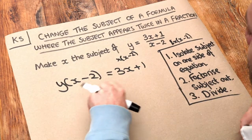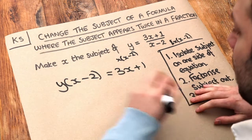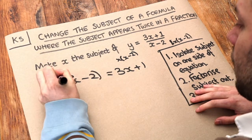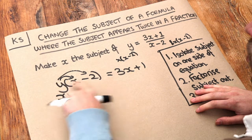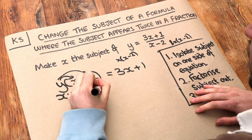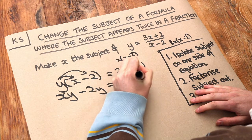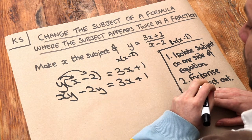Now we should probably expand out this bracket as well, because we want to get everything out into the open. So if we multiply this out, we get y times x is xy. Remember, alphabetical order. And y times minus 2 is minus 2y.